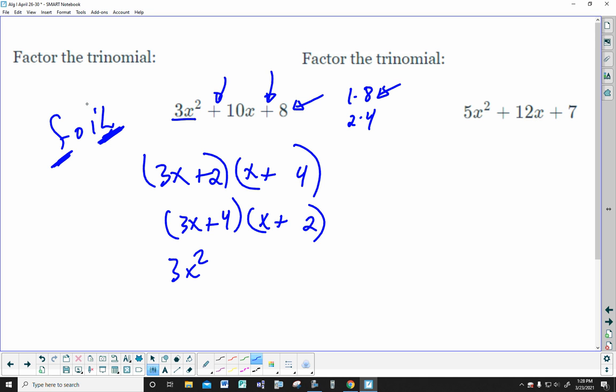Because both of these, the first is going to give you 3x squared. The last is going to give you 8 in both of them. What you don't know is about the middle. So, let's try this one. Outside, plus 12x. Inside, plus 2x. 14x. I don't have a 14x.